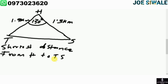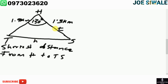The first thing I am supposed to do is calculate length TS and also calculate the area of this non-right angled triangle. Before we calculate the length, let us identify the parts of this triangle. This is small letter h, this is small letter t, and this is small letter s.